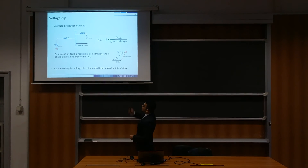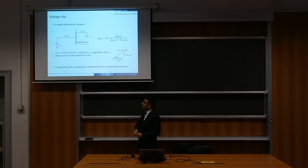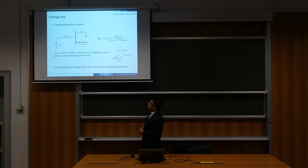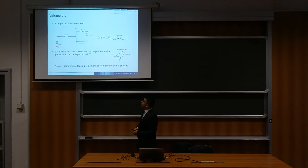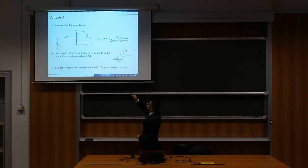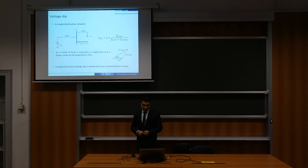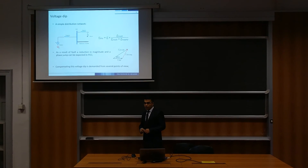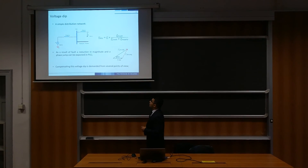As you can see, in a simple distribution network, if a fault occurs on one of the feeders, the voltage at the point of common coupling can be calculated using the voltage divider rule. As a result of the fault, a reduction in magnitude and a phase jump can be expected, as shown in the phasor representation.